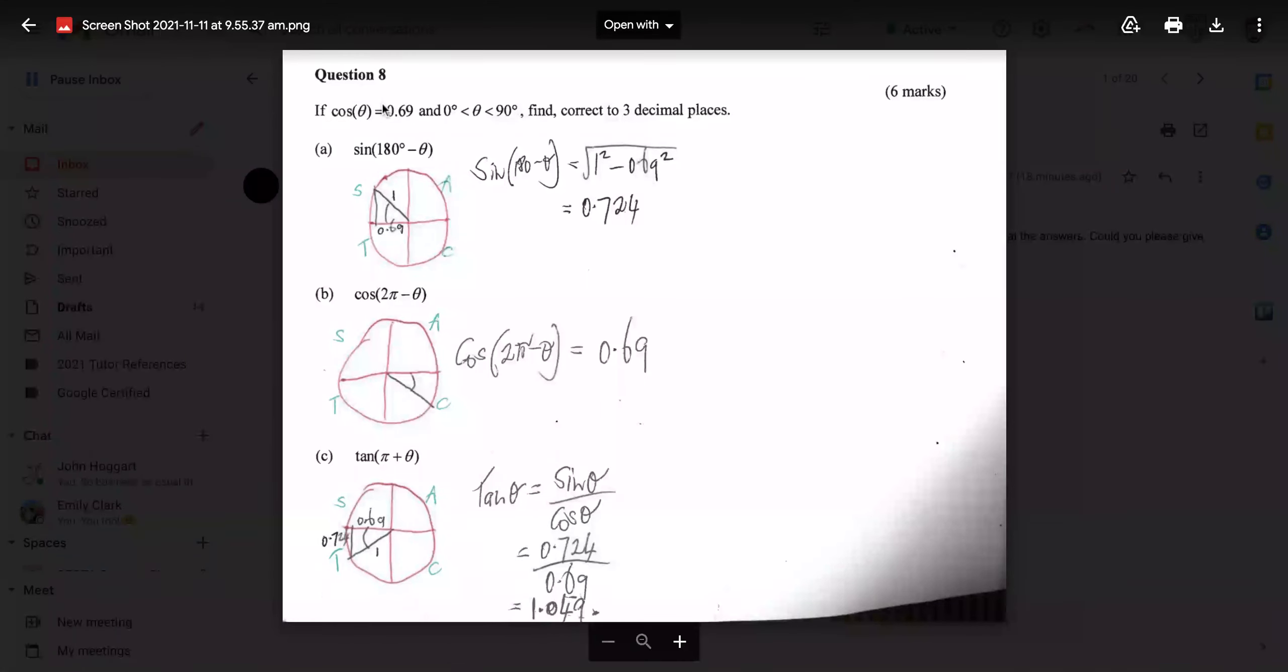Really quickly then, a few things are going on. First of all, cos theta is equal to 0.69 and we're told that theta is an acute angle between 0 and 90. So theta is somewhere in here, which means that 180 minus theta would be, well there's 180 all the way across to here. And then we're going to go back theta here.